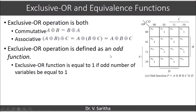Exclusive OR is defined as an odd function. An odd function means if the number of inputs equal to 1 is odd, then Exclusive OR equals 1. Looking at the K-map: 0001 has one 1 (odd) so output is 1; 0011 has two 1s (even) so output is 0; 0010 has one 1 (odd) so output is 1; 0100 has one 1 (odd) so output is 1; 0111 has three 1s (odd) so output is 1. This confirms XOR is an odd function.